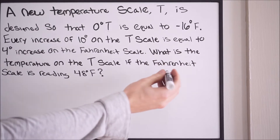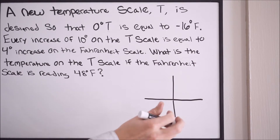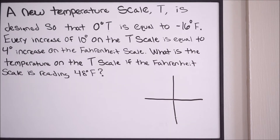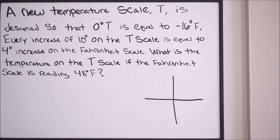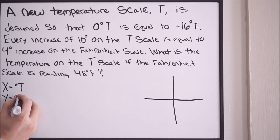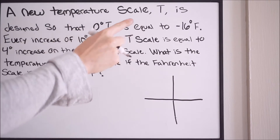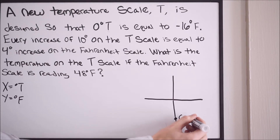If we create a grid, we can graph the first point they give us. 0 degrees T equals negative 16 degrees Fahrenheit. Let's label our axes: the x-axis is degrees T and the y-axis is degrees Fahrenheit. So 0 degrees T equals negative 16 degrees Fahrenheit means we have a point at (0, -16).